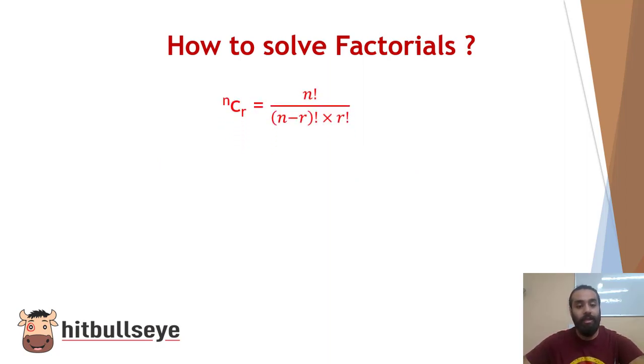Suppose we have an equation nCr. So when we open this equation, we get n factorial upon n minus r factorial multiplied by r factorial. Now what does this factorial denote?